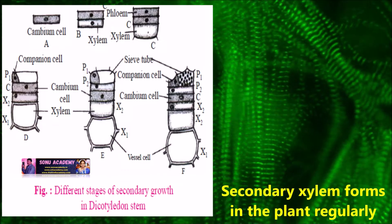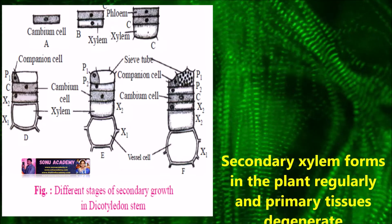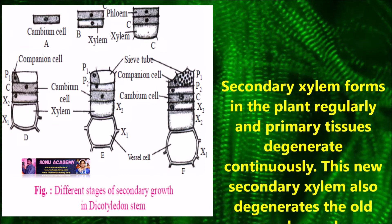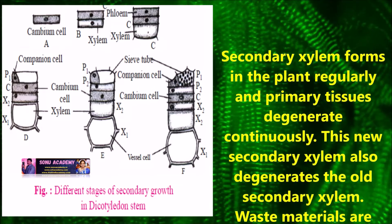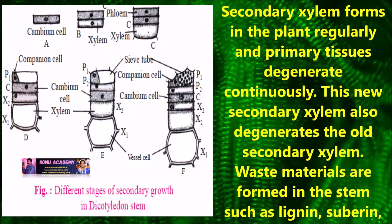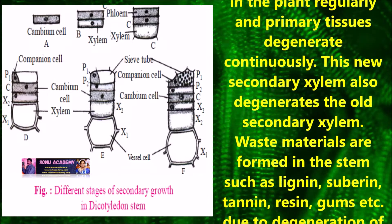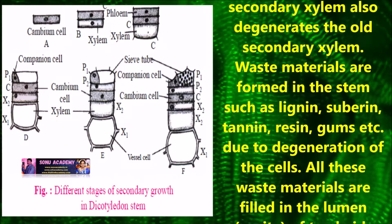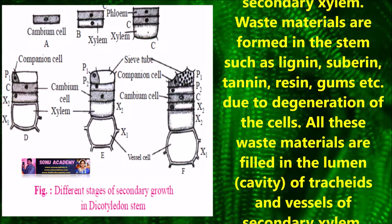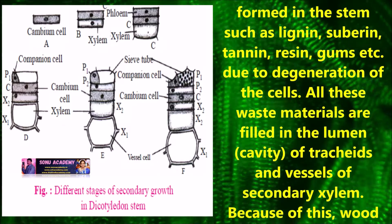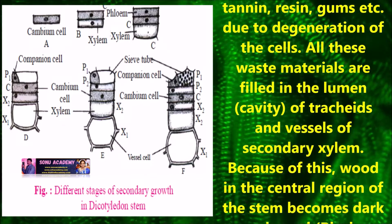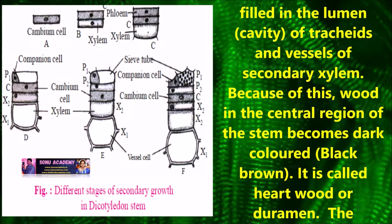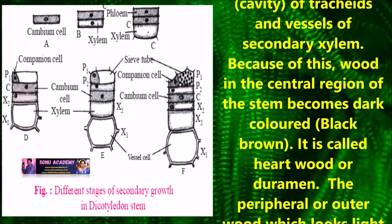The secondary xylem forms in a plant regularly and primary tissues degenerate continuously. This new secondary xylem also degenerates the old secondary xylem. Waste materials such as lignin, suberin, tannin, resin, and gums are formed due to degeneration of cells. All these waste materials fill the lumen cavity of the tracheids and vessels of secondary xylem. Because of this, the wood in the central region of the stem becomes dark colored. It is called heartwood or duramen.